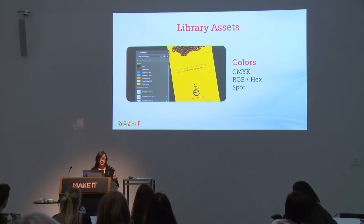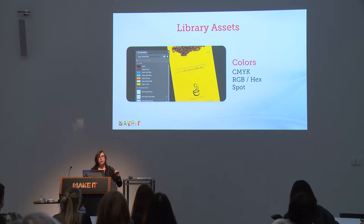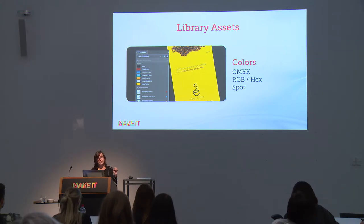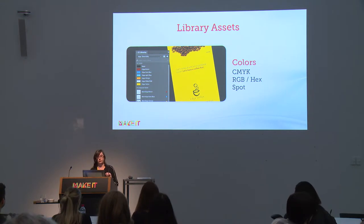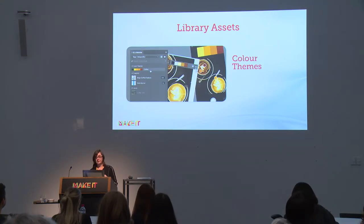Another asset type is your CMYK and RGB colours. If you read documentation about colour library assets, it will say you can't do spot colours. However, there is a workaround to get spot colours into your library — you need to create them in Illustrator. I've tested it, but I don't want to demo it in case I make a mistake.